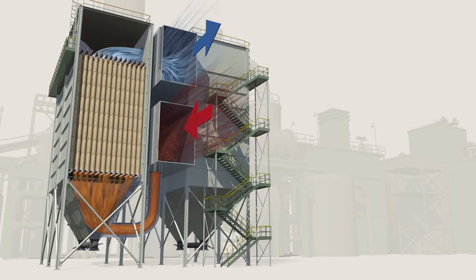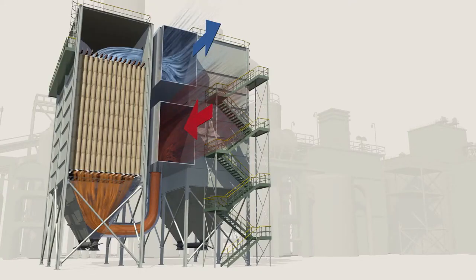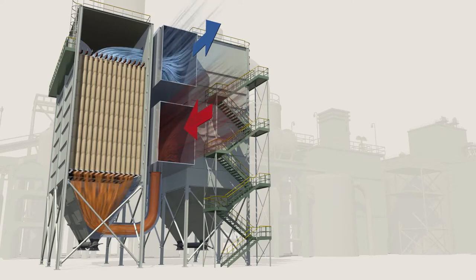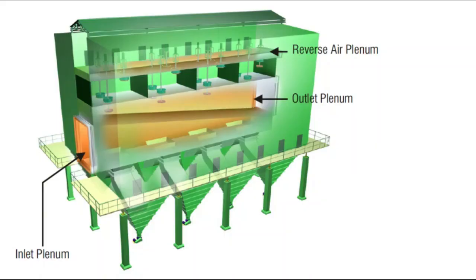Unlike a standard bag filter, with RABH we can do maintenance individually. For example, if there are 12 chambers, one chamber can be taken for maintenance while the other 11 chambers remain in process. The units are custom-built and the structures and panels are dispatched knocked down.